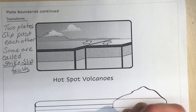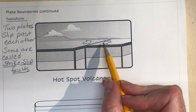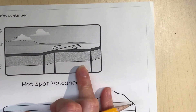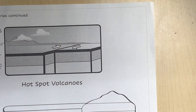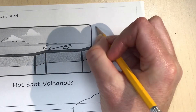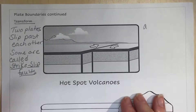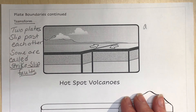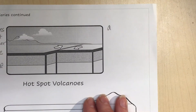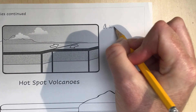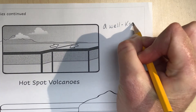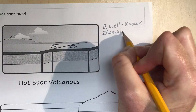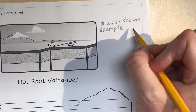The plates are sliding past each other, and you still have magma down below but it's not coming into play in this one. Our well-known example is really close to us: the San Andreas Fault. It's between Santa Clarita and Palmdale — that's where the plate boundary is.